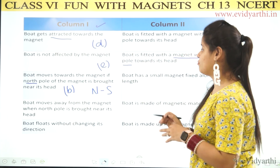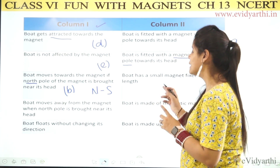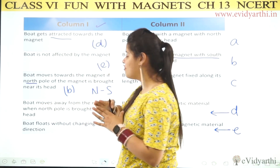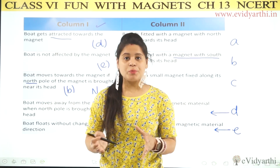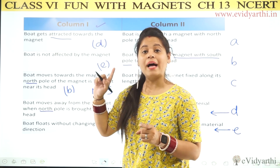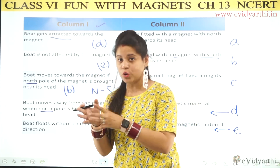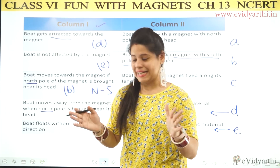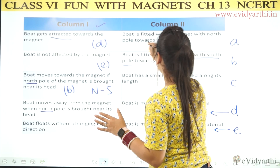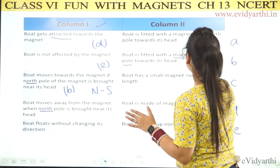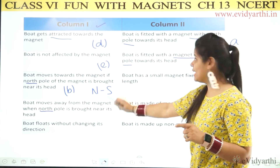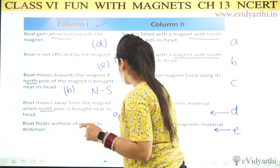Next effect: the boat moves away from the magnet when the north pole is brought near its head. The boat moves away from the north pole, which means repulsion is occurring. If the boat's head also has a north pole, then the north pole of the external magnet will repel it. So the boat is fitted with a magnet with its north pole towards its head. The answer is A.